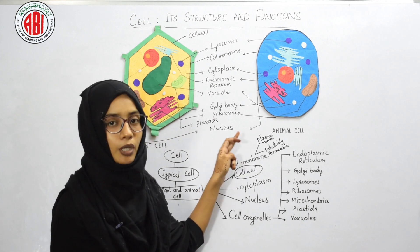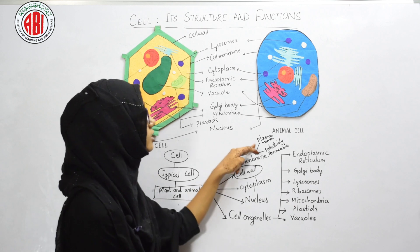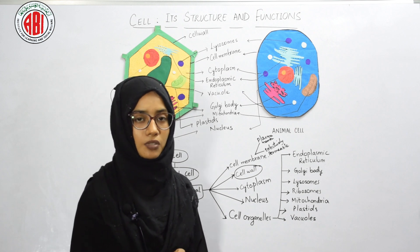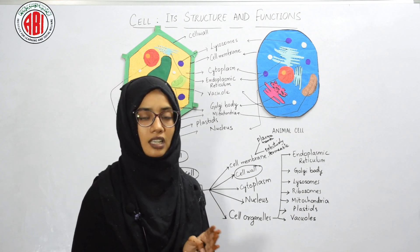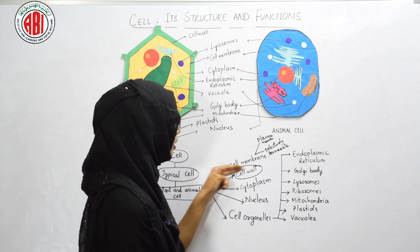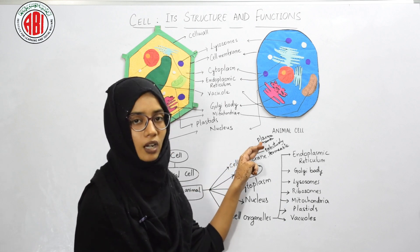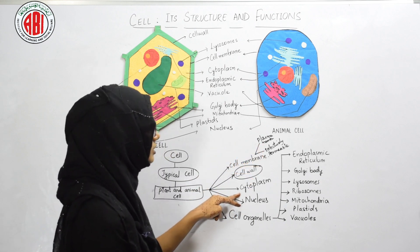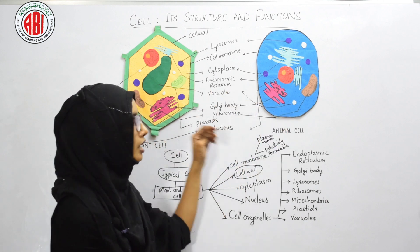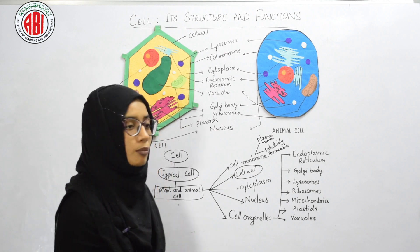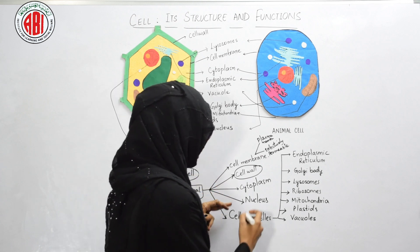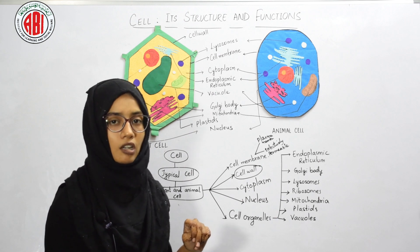The cell membrane is also called the plasma membrane, as it covers the plasma, and the selectively permeable membrane, because it permits only suitable substances to enter and selective substances to move out — regulating the movement of substances in and out of the cell. Cytoplasm is a fluid present in both animal and plant cells; it provides a medium for all cell organelles to float in and also provides nourishment as it contains minerals, ions, and water.